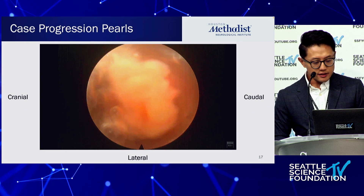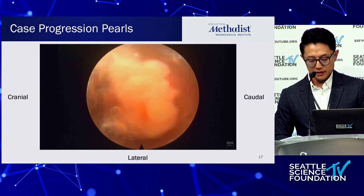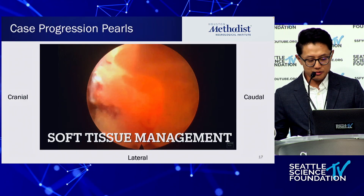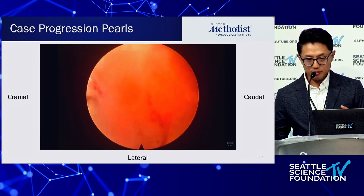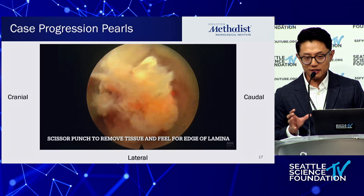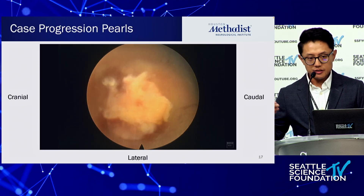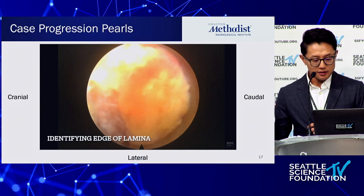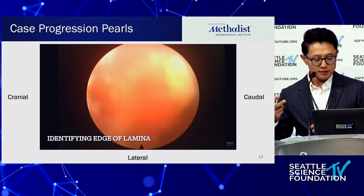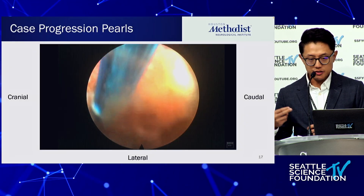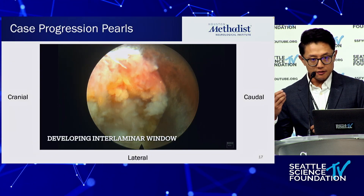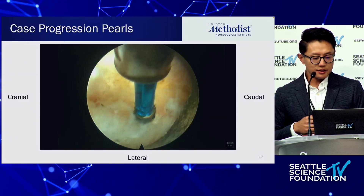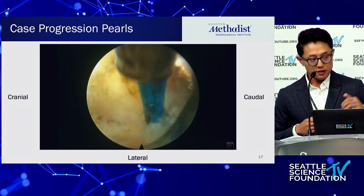Here are the progression pearls. This is left side, so cranial is to the left, caudal to the right, lateral at six o'clock. First, you have to deal with soft tissue — when you first put in the scope you just see this. Don't bring in your RF probe to shrink tissues; you'll spend 20 minutes and accomplish nothing. Instead, during dilator and cannula placement, maintain a stereotactic idea of where the bone is. Use a scissor punch or graspers to remove tissue quickly while palpating for the laminar edge.